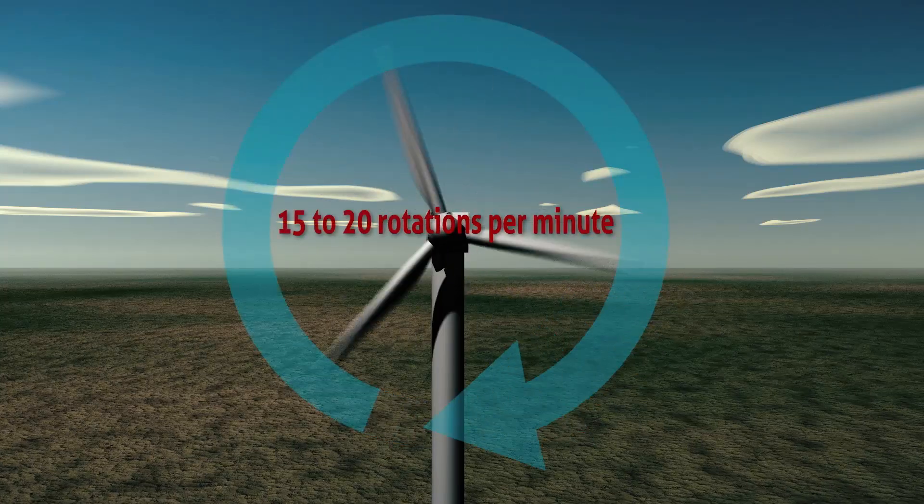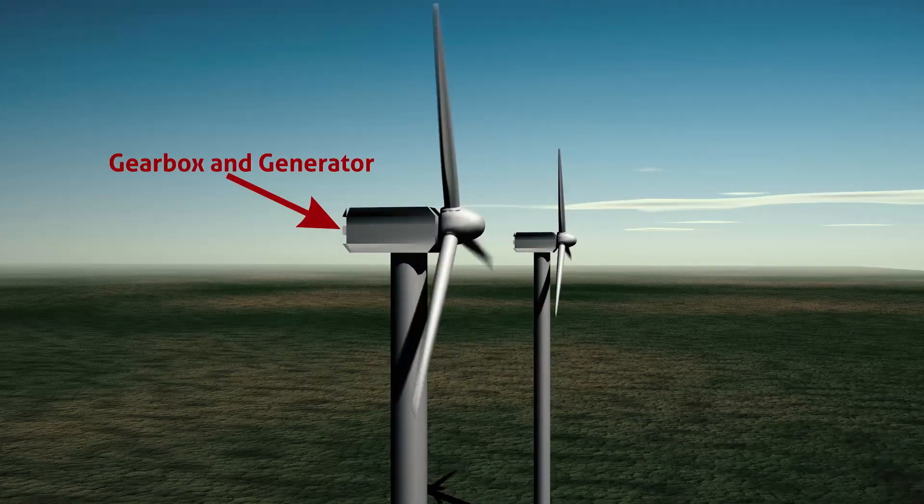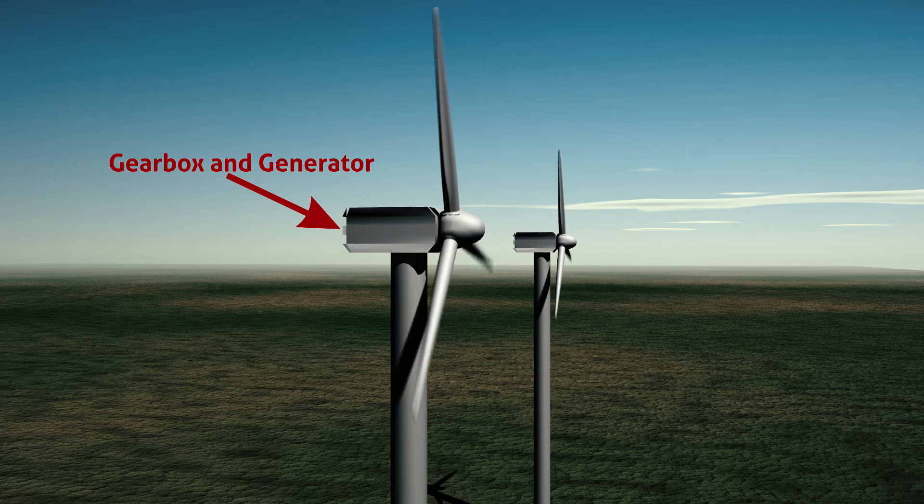When you have a wind turbine, how it works is, you have the blades of a wind turbine rotate at about 15 to 20 rotations per minute. And this rotates a shaft, which in turn is connected to a gearbox and generator. And the gearbox basically makes those 15 to 20 rotations into 1,800 rotations if it's a 1 megawatt turbine. And that generates the electricity.